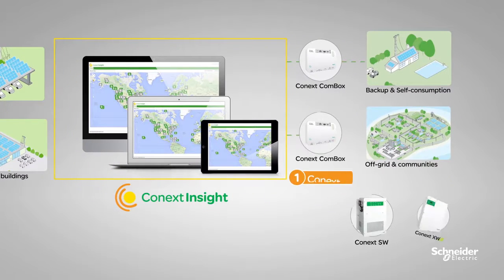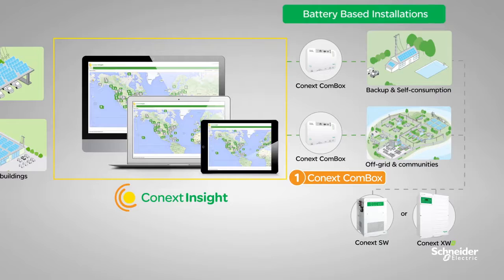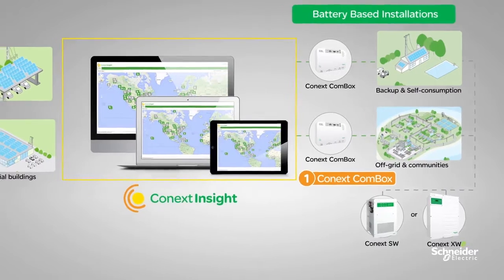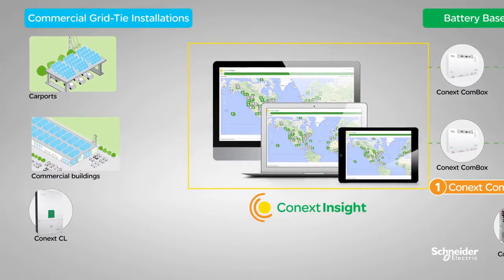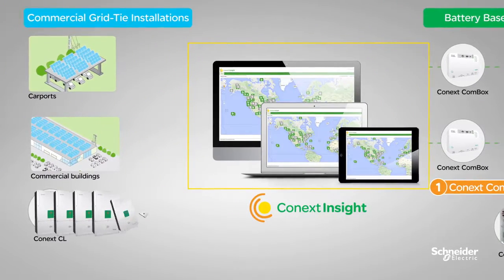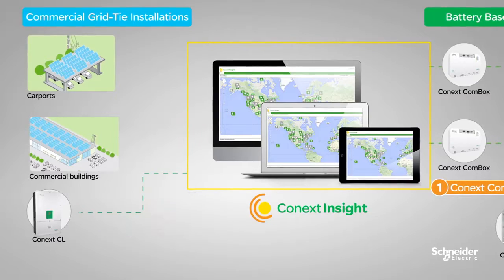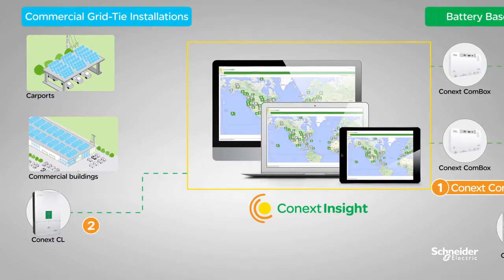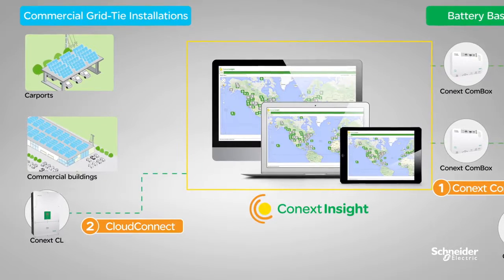Connext Combox is the on-premise data logger for battery-based installations. Commercial grid tie installations using up to eight Connext CL inverters can directly connect to Connext Insight using the Cloud Connect feature.